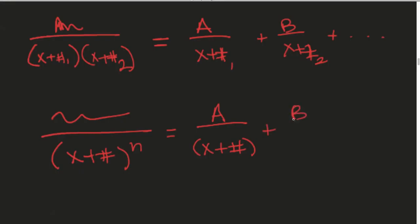You just do a letter until you get to the power that you're desiring. In this case, C we'll say over X plus number to the n. Do you understand that rule?